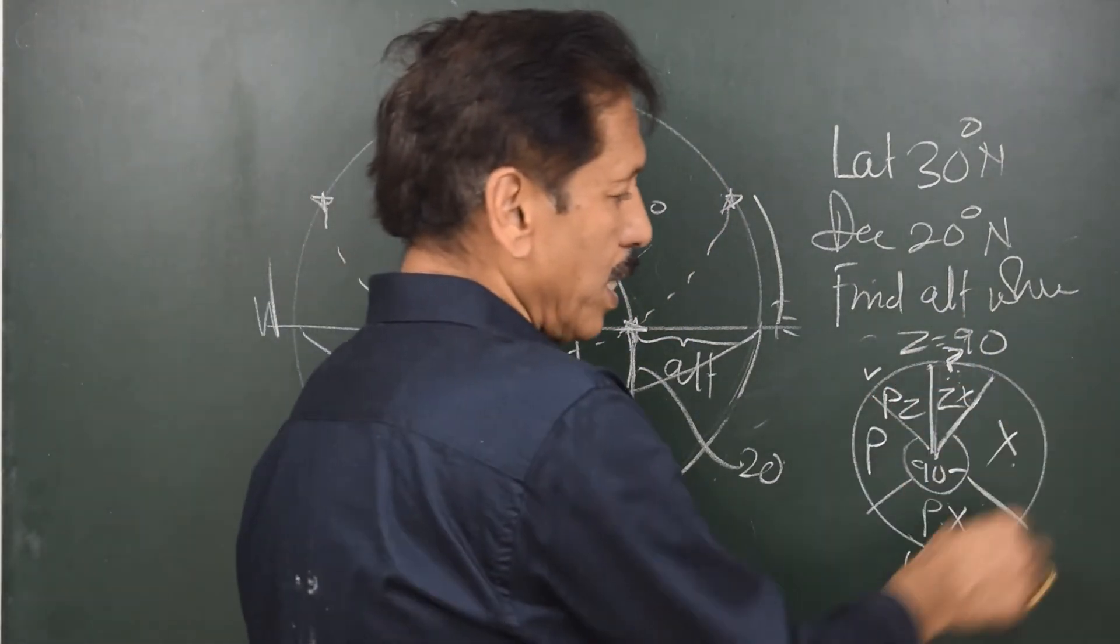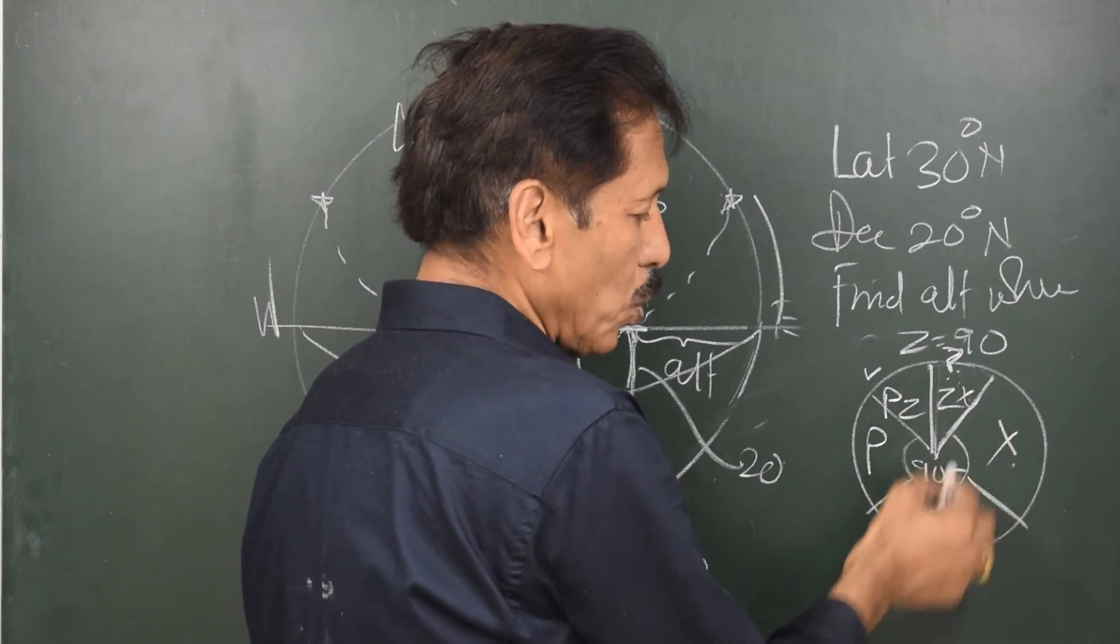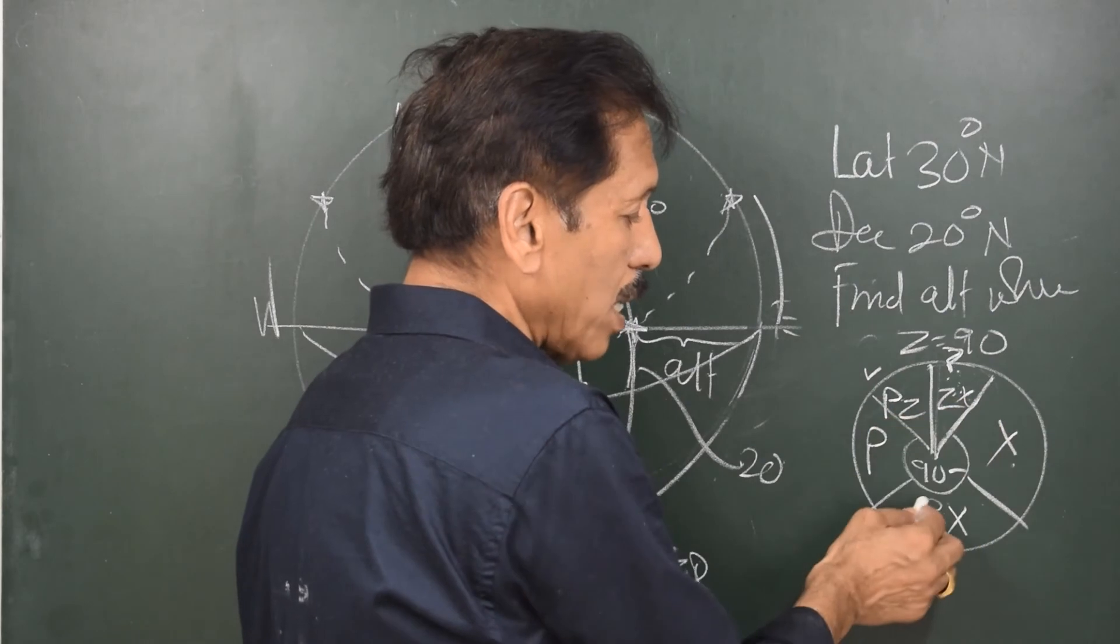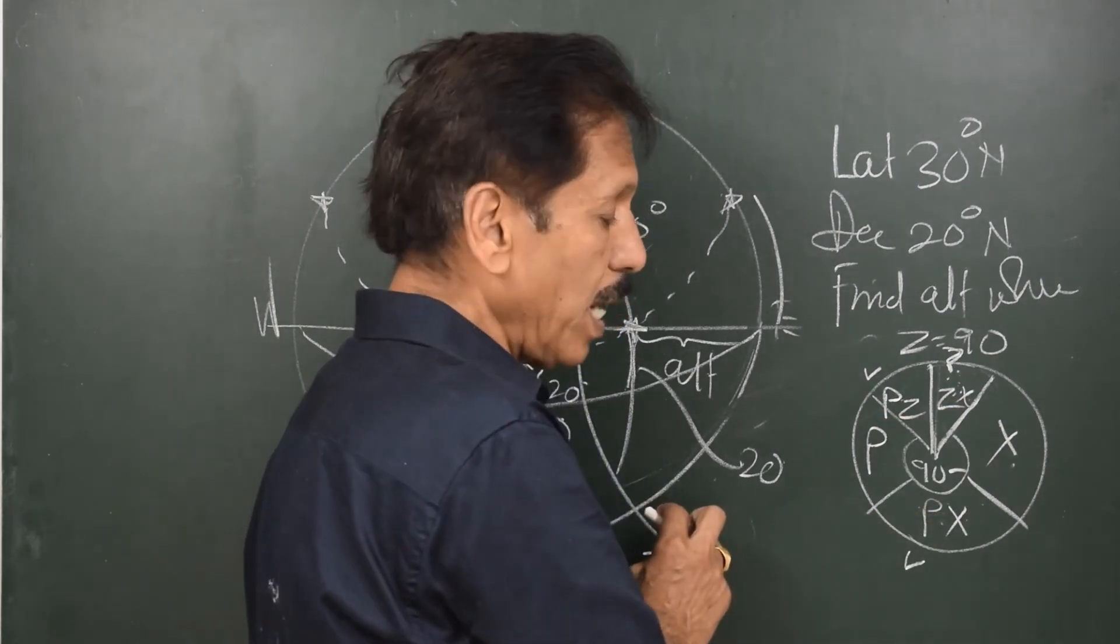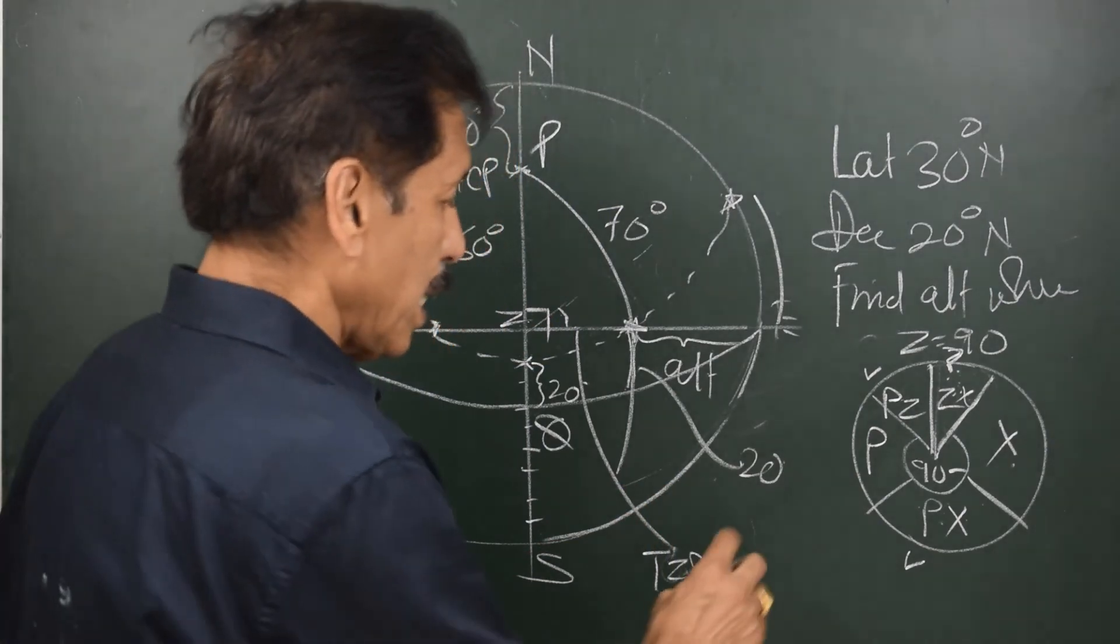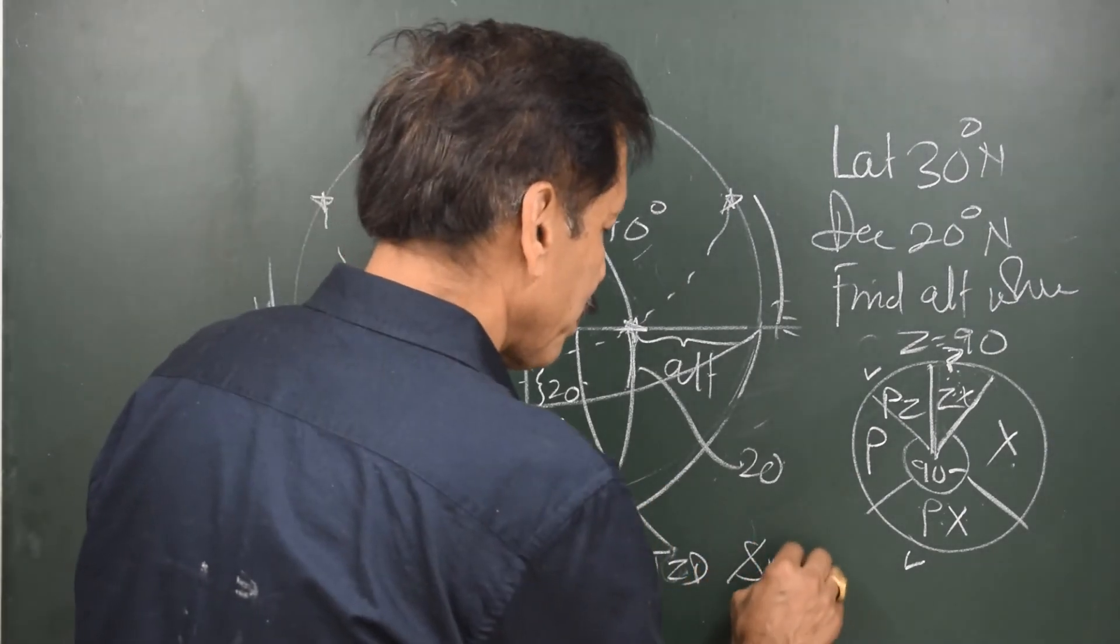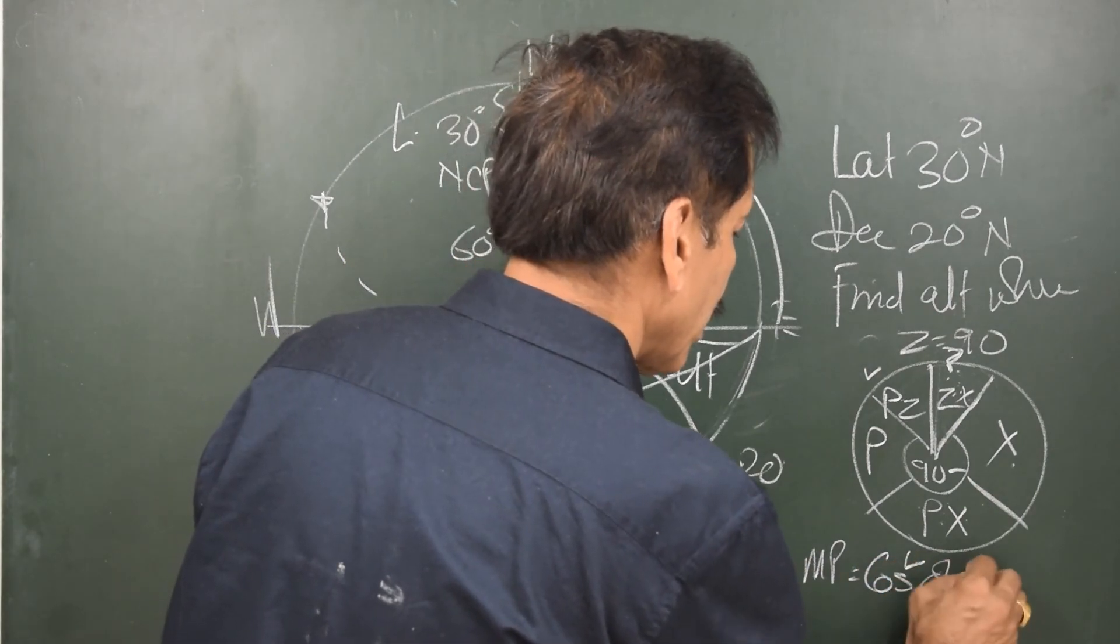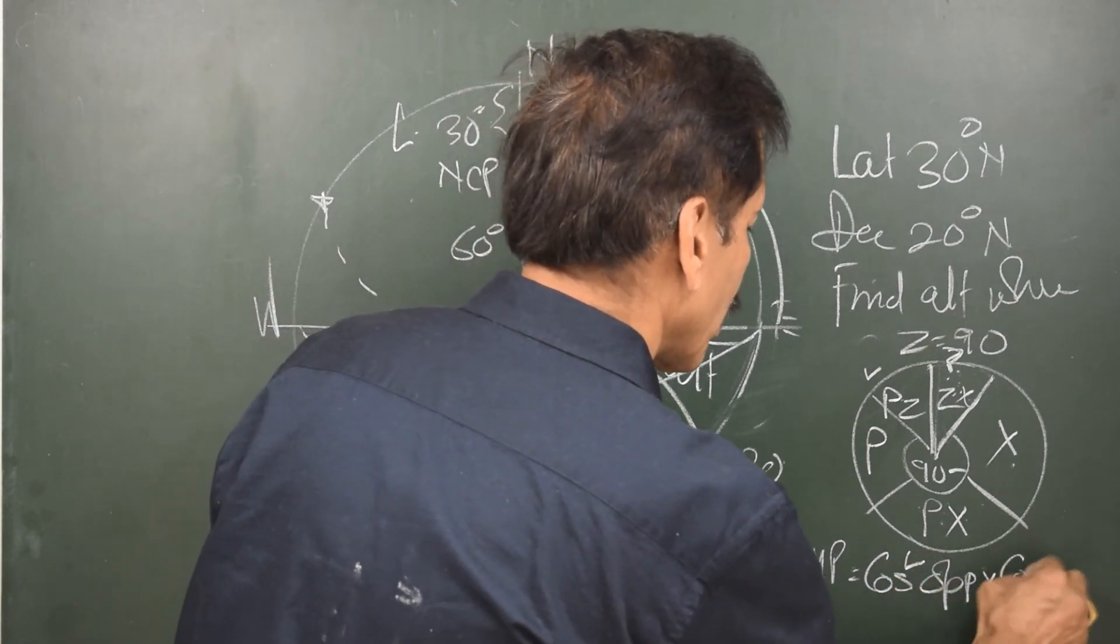So, I look at this Napier circle. I find 1, 2, 3 items are the items of my concern. The two are opposite to this third item. So, I will apply the second rule of Napier. That is, sine of middle part is equal to cos opposite into cos opposite.